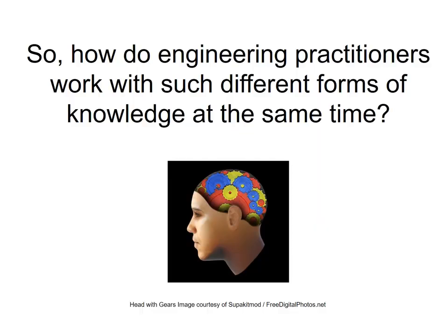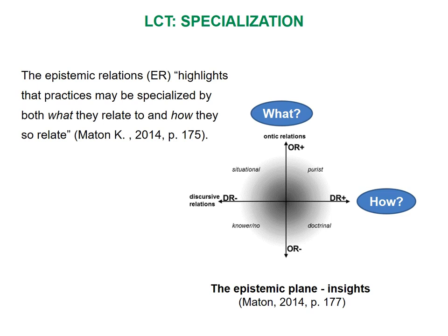The analytical tool used to look at the problem-solving moment comes from one of the Legitimation Code Theory dimensions: Specialization — specifically, the concept of epistemic relations. This is about the what and the how of knowledge. The vertical axis is about the phenomenon in question and how strongly it is bounded by recognizable and legitimate principles. The horizontal axis is about ways of approaching the phenomenon; the stronger the rules, the stronger the so-called discursive relations.